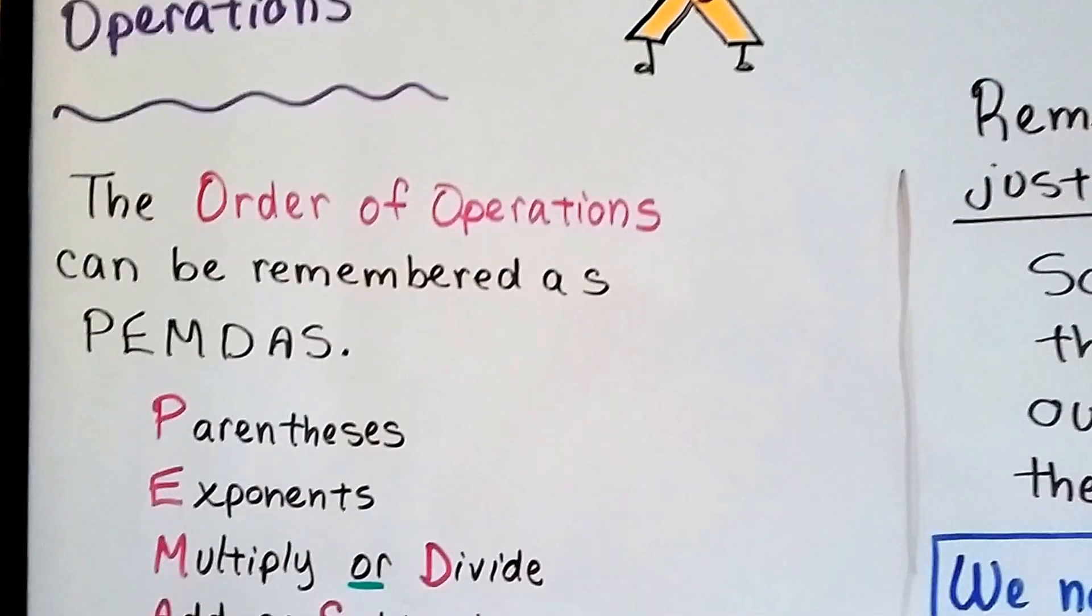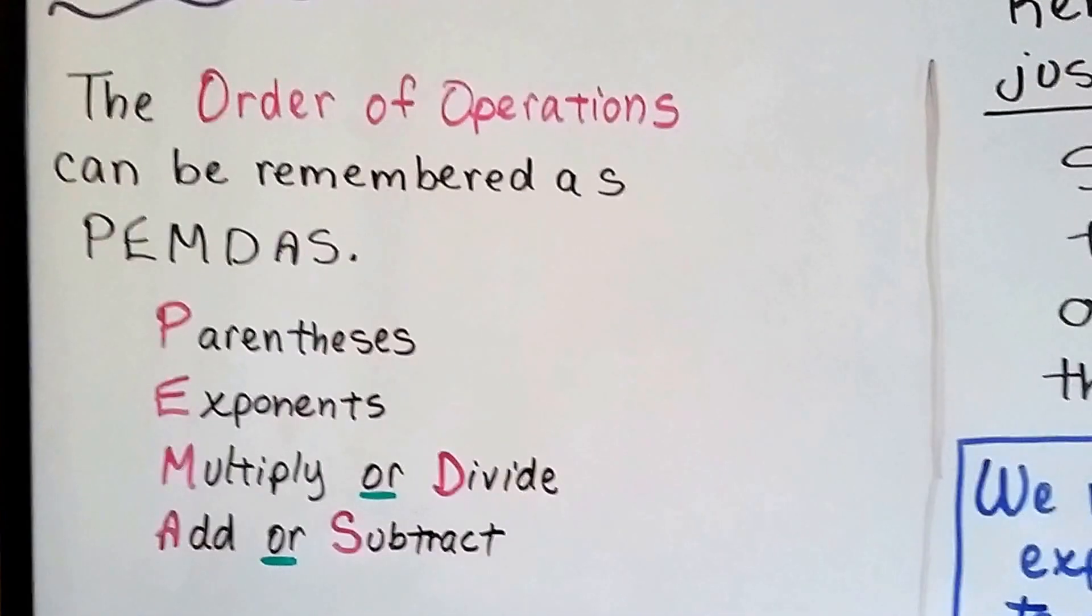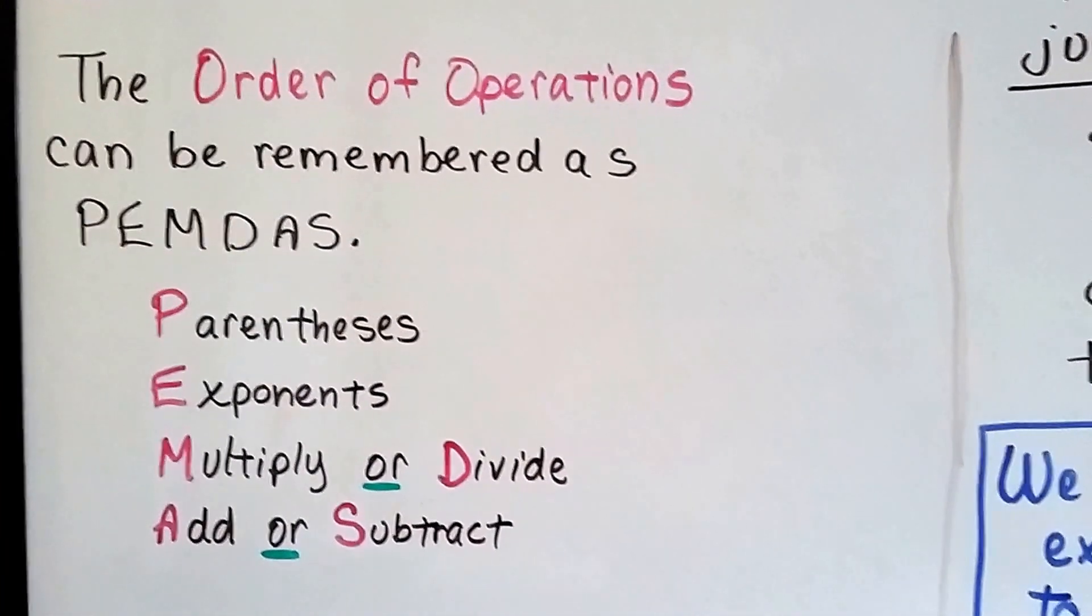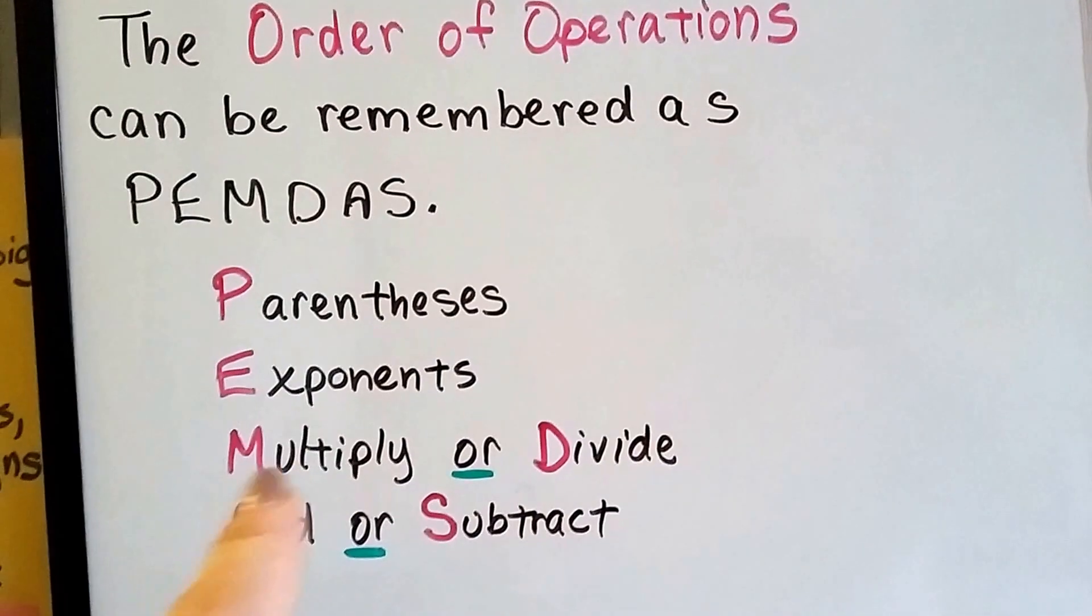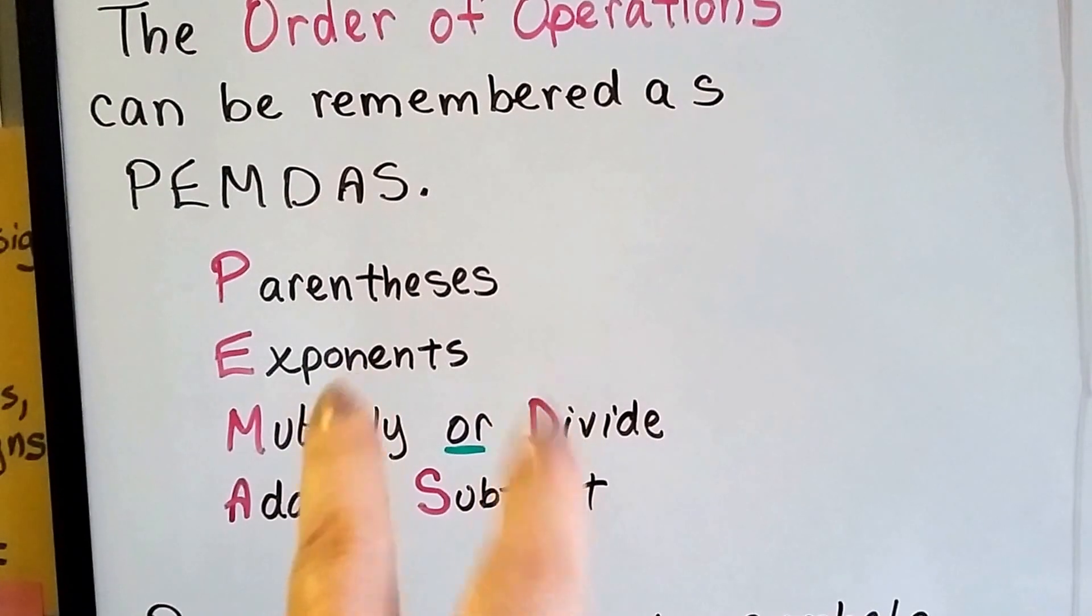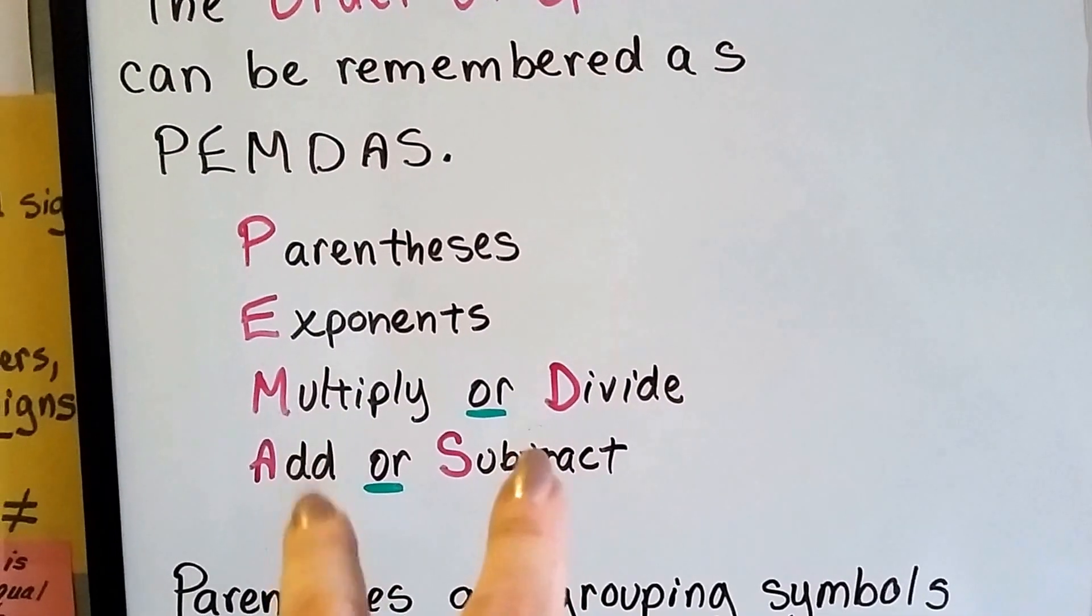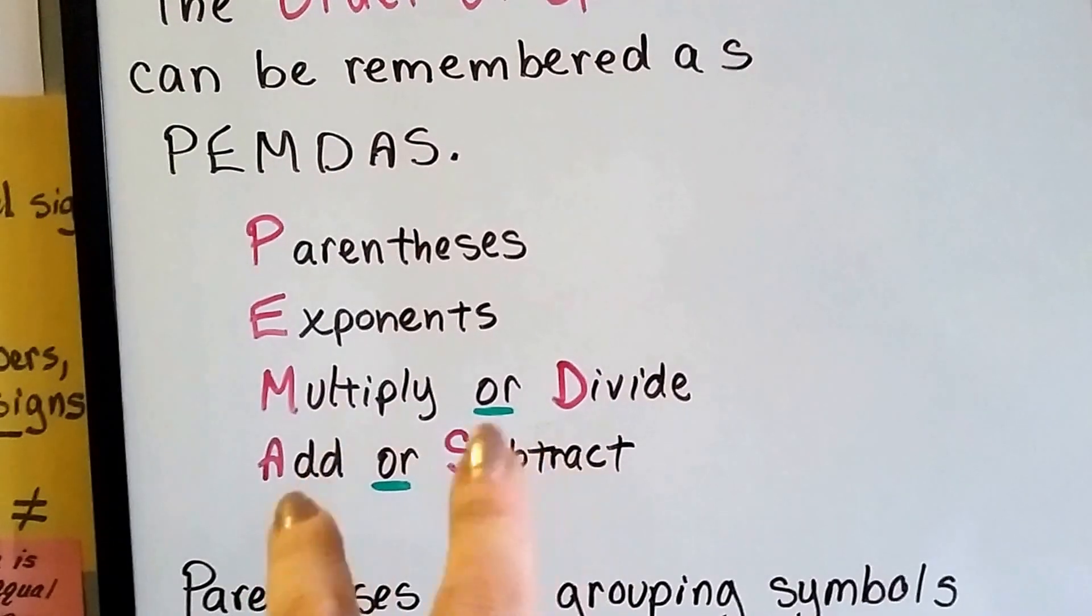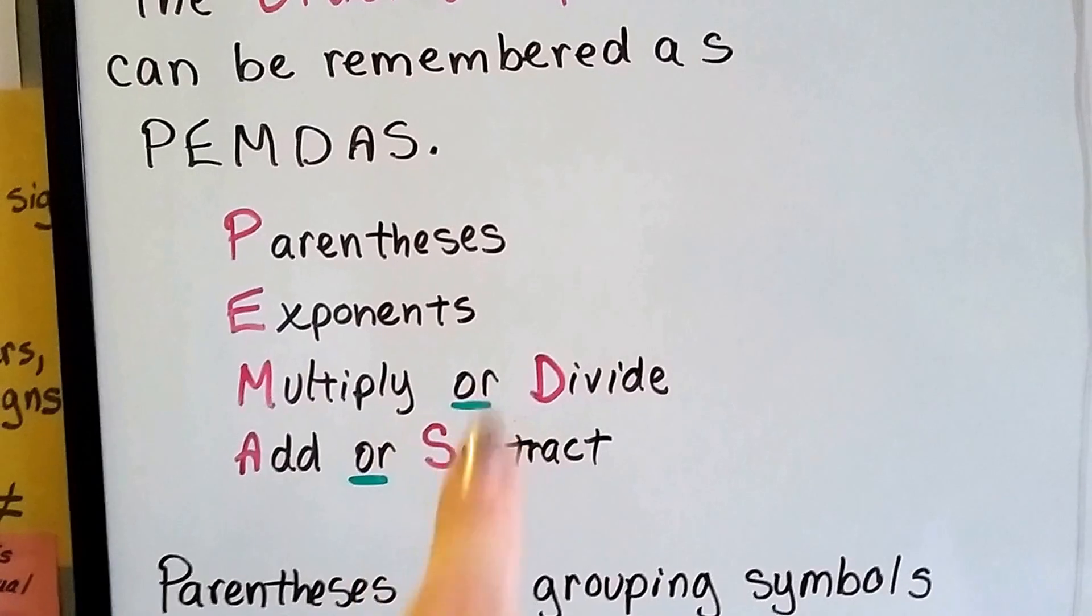The order of operations can be remembered as PEMDAS: parentheses, exponents, multiply or divide, add or subtract. Notice it says 'or,' not 'then.' You might have to multiply or divide—one doesn't necessarily come before the other. Similarly, you might have to add or subtract. It doesn't mean addition then subtraction; it's either or.